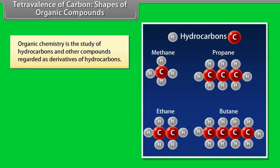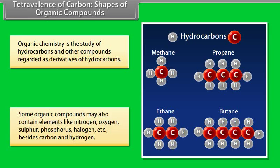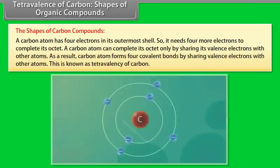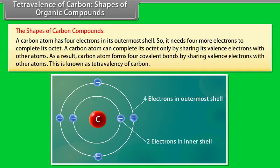Tetravalence of carbon. Organic chemistry is the study of hydrocarbons and other compounds regarded as derivatives of hydrocarbons. Some organic compounds may also contain elements like nitrogen, oxygen, sulfur, phosphorus, halogen, etc., besides carbon and hydrogen. A carbon atom has 4 electrons in its outermost shell, so it needs 4 more electrons to complete its octet. A carbon atom can complete its octet only by sharing its valence electrons with other atoms.